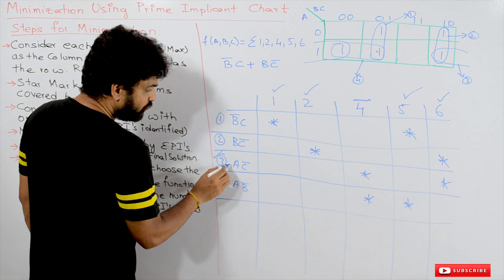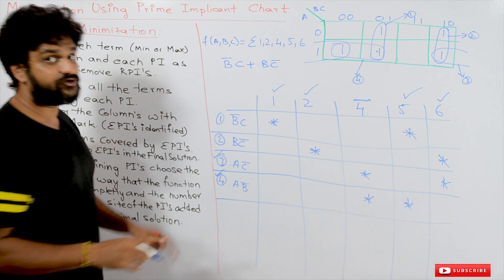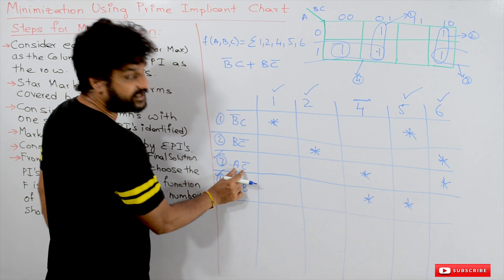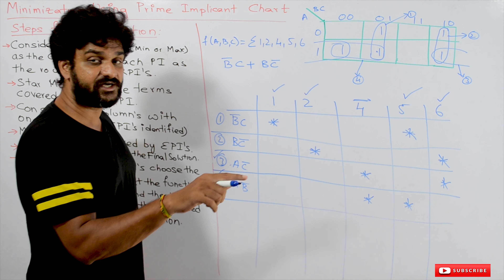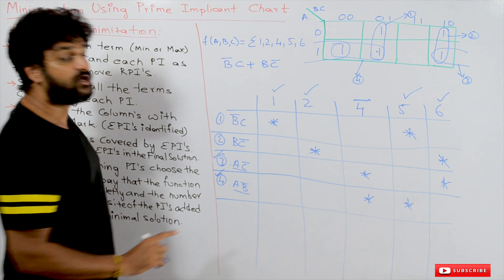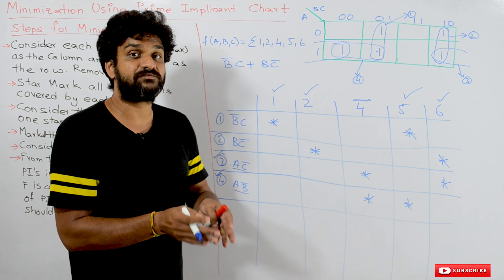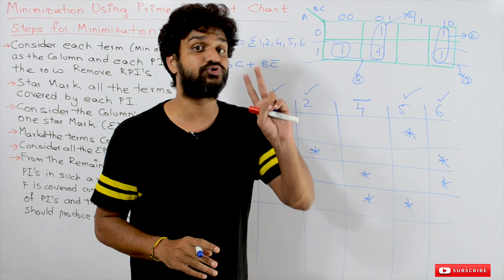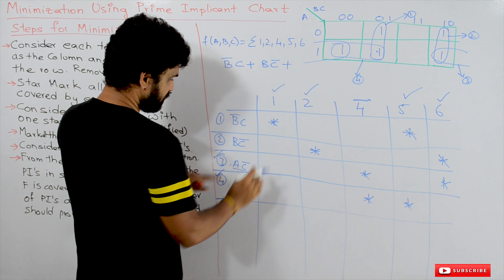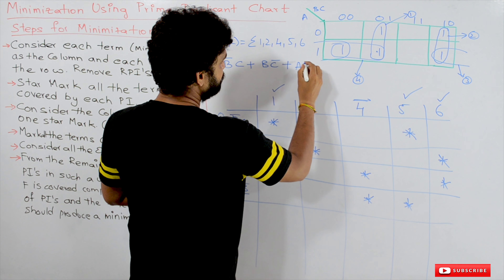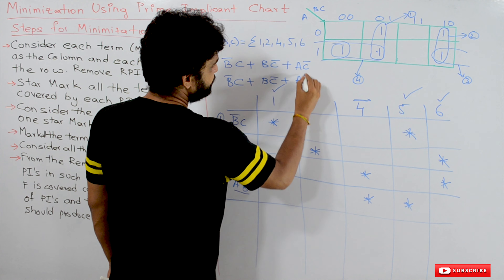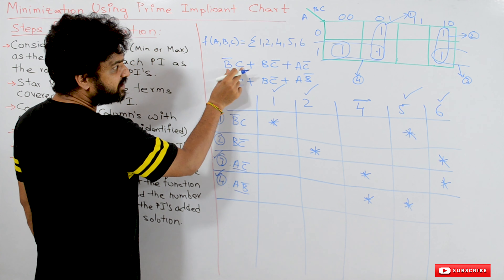Both ac̄ and ab̄ cover min term 4, and both are of equal size — each has two literals. So both are equally valid choices, meaning we get two minimal solutions. The first is b̄c + bc̄ + ac̄, and the second is b̄c + bc̄ + ab̄.